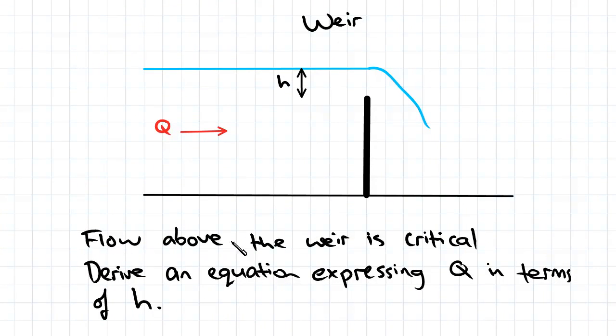So here's the question, flow above the weir is critical, derive an equation expressing Q in terms of H.